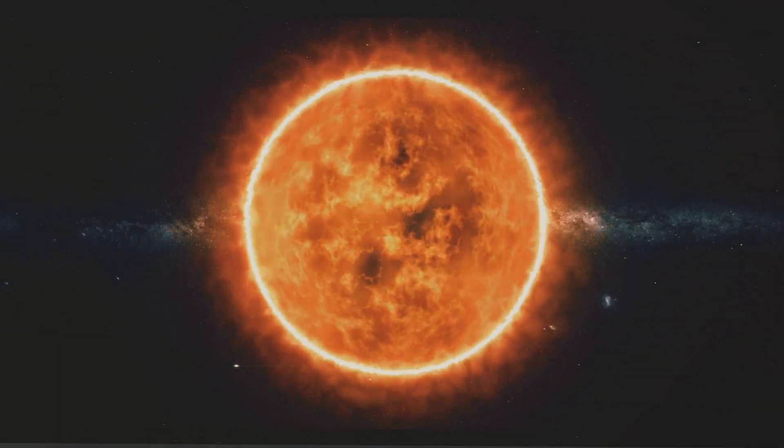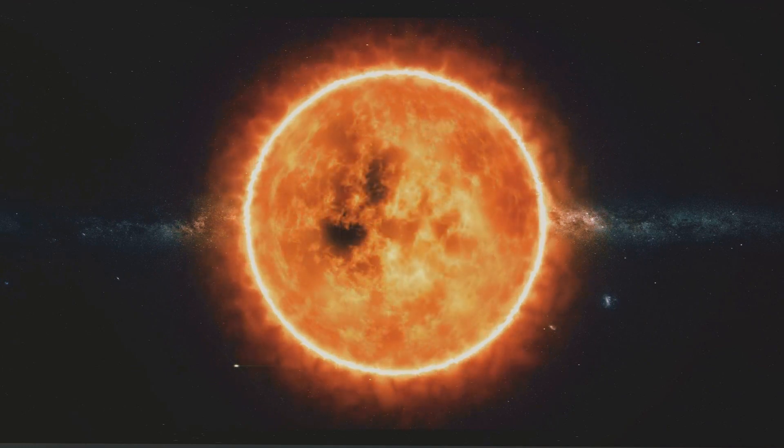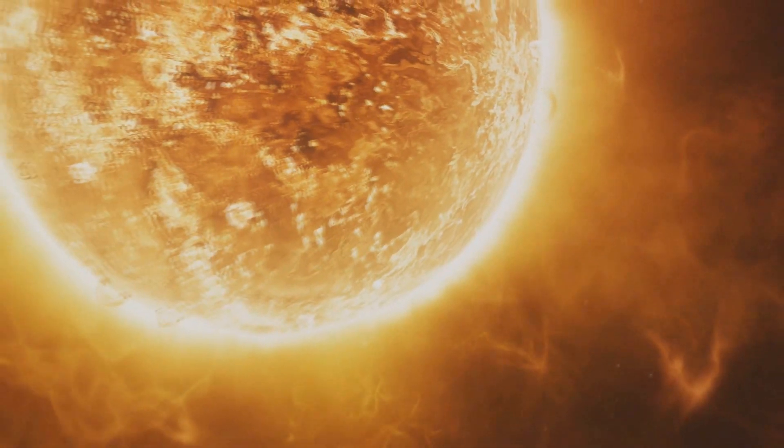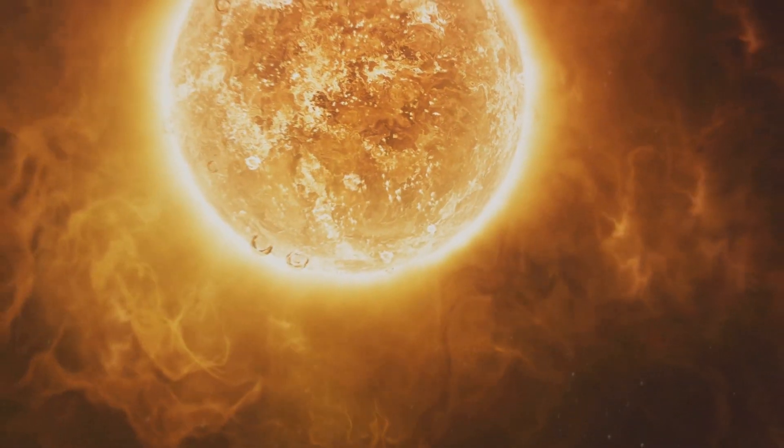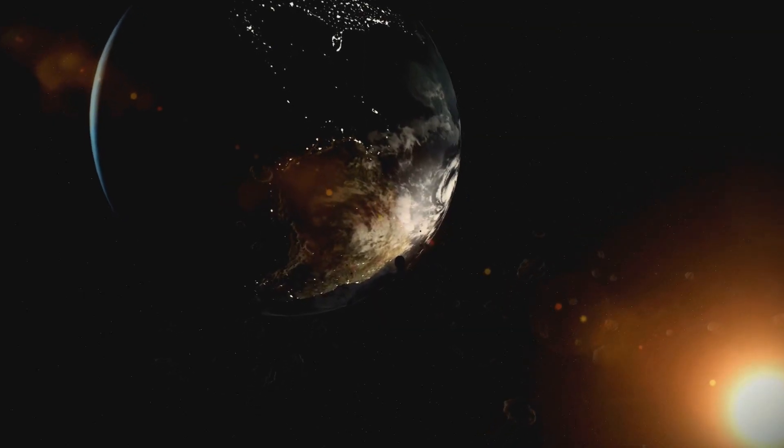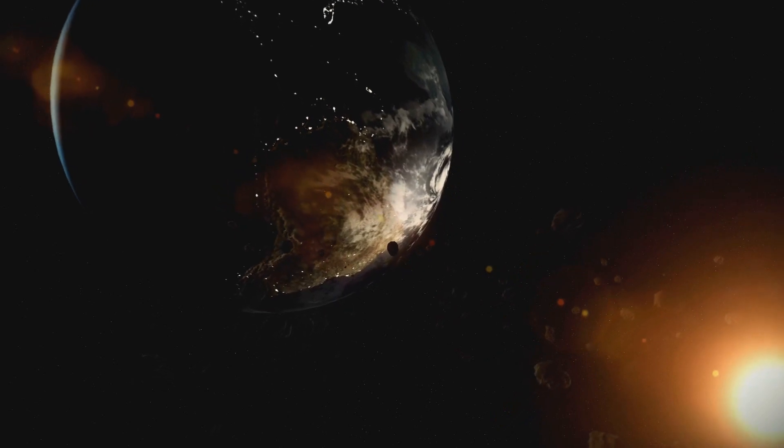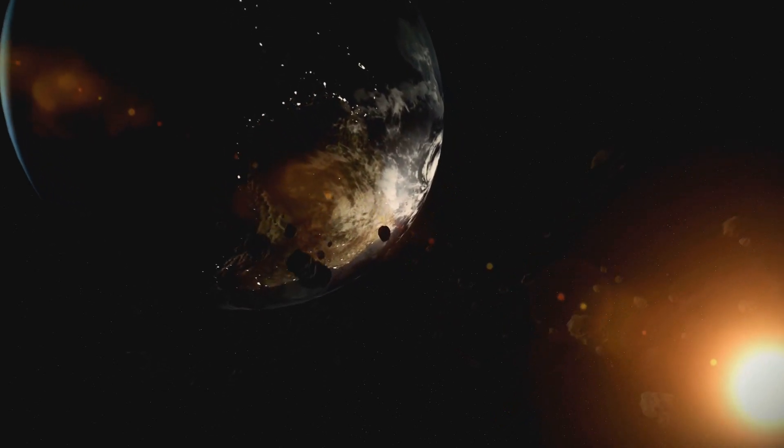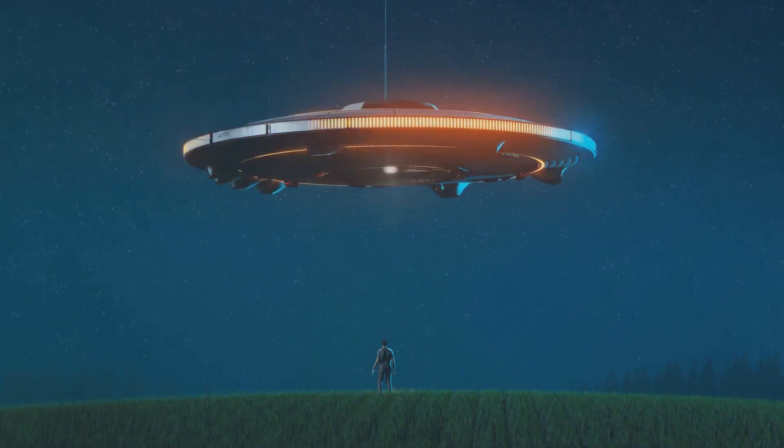So, there you have it, the top seven things that could destroy Earth. Solar flares from our own sun, the threat of asteroid impacts, potential alien invasions, rogue black holes wandering the cosmos, and the human-induced threats of rapid climate change, nuclear war, and unchecked artificial intelligence. Each carries its own risks and uncertainties.